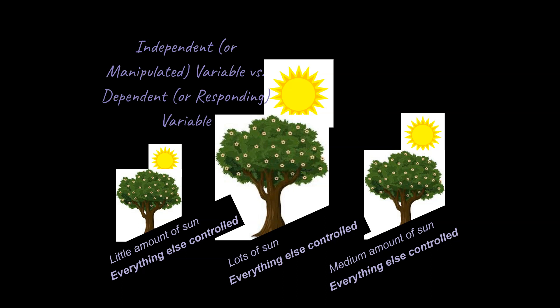So, in this case, the independent variable would be the amount of sunlight because the amount of sunlight, it doesn't essentially care. It doesn't depend on the plant growth. But the sun just shines, it's independent of the plant growth.